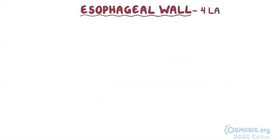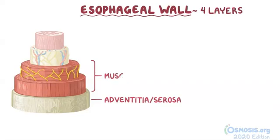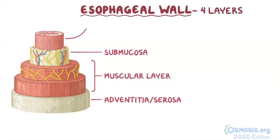The esophageal wall has four layers. From the outside in, these are the adventitia or serosa, the muscular layer, the submucosa, and the mucosa.